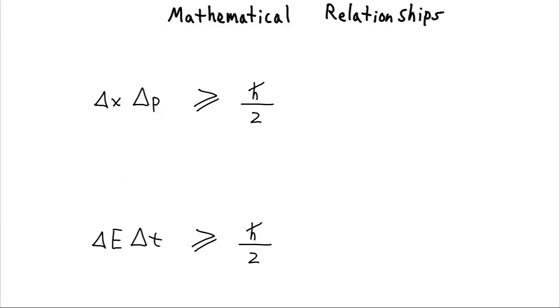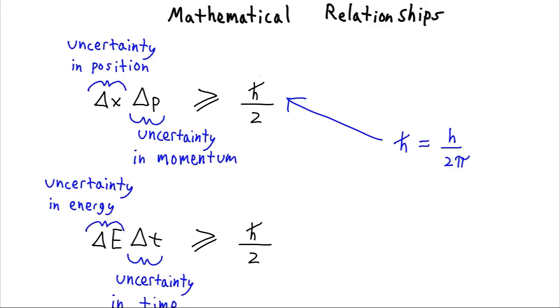And we can also give some mathematical formalism to these relationships. So we can say that the uncertainty, which we're going to represent with a capital delta, just like change, of the position x times the uncertainty of the momentum p is greater than or equal to some minimum value of h-bar over 2. Let me go ahead and put these definitions up here.